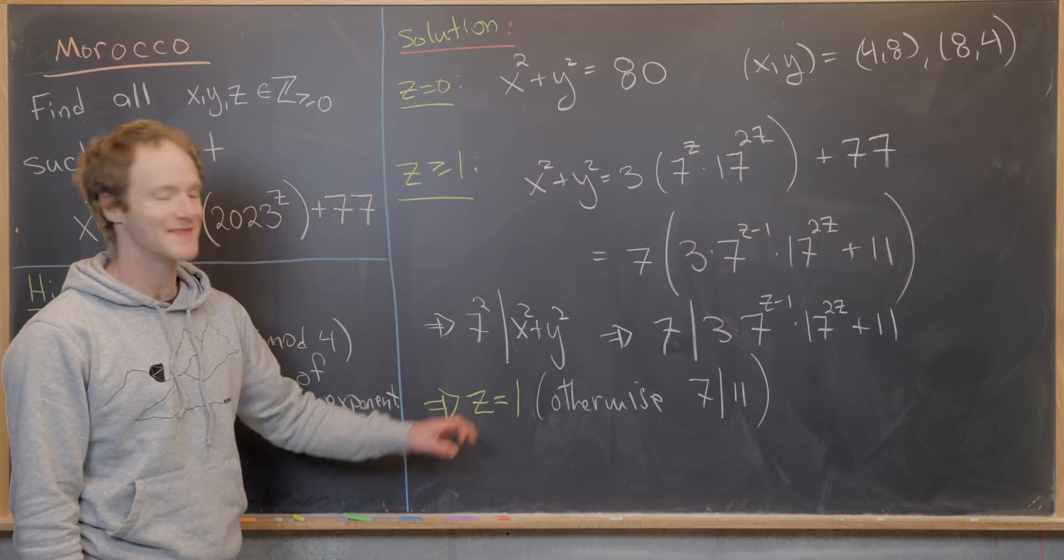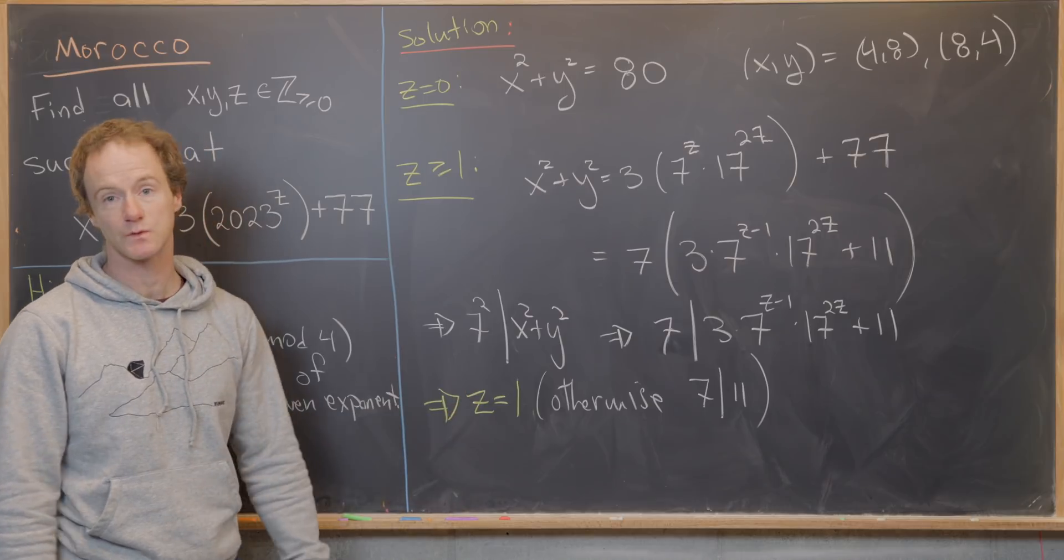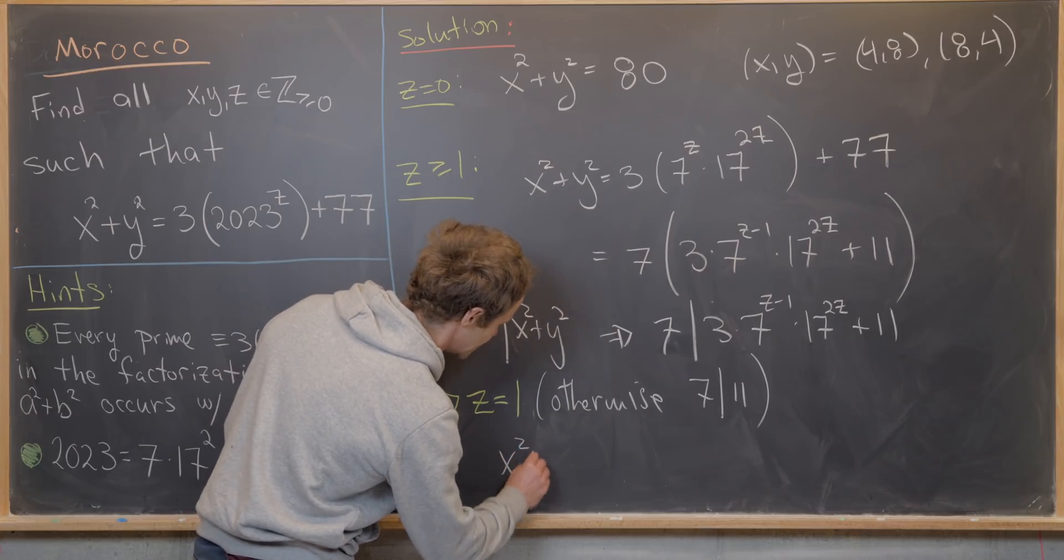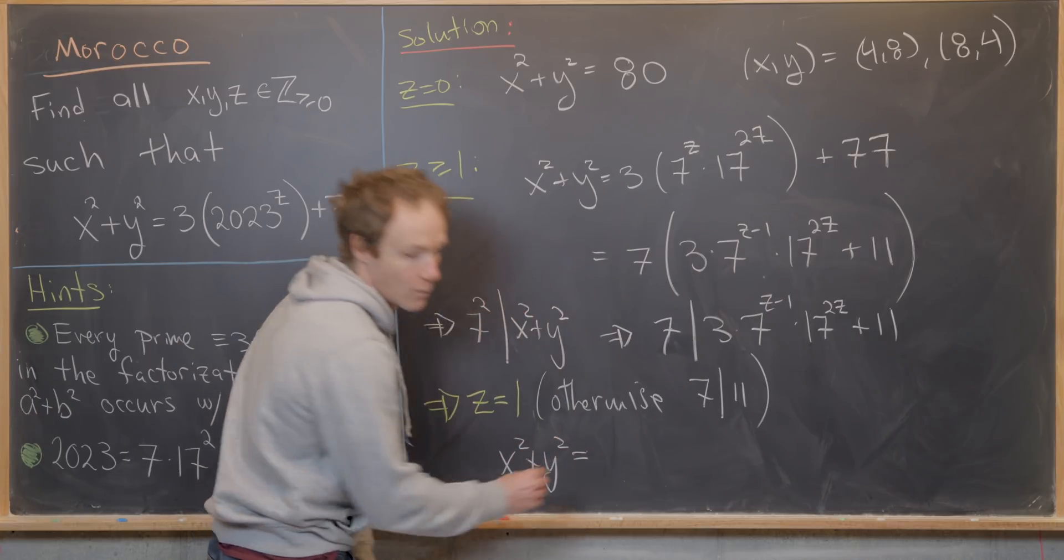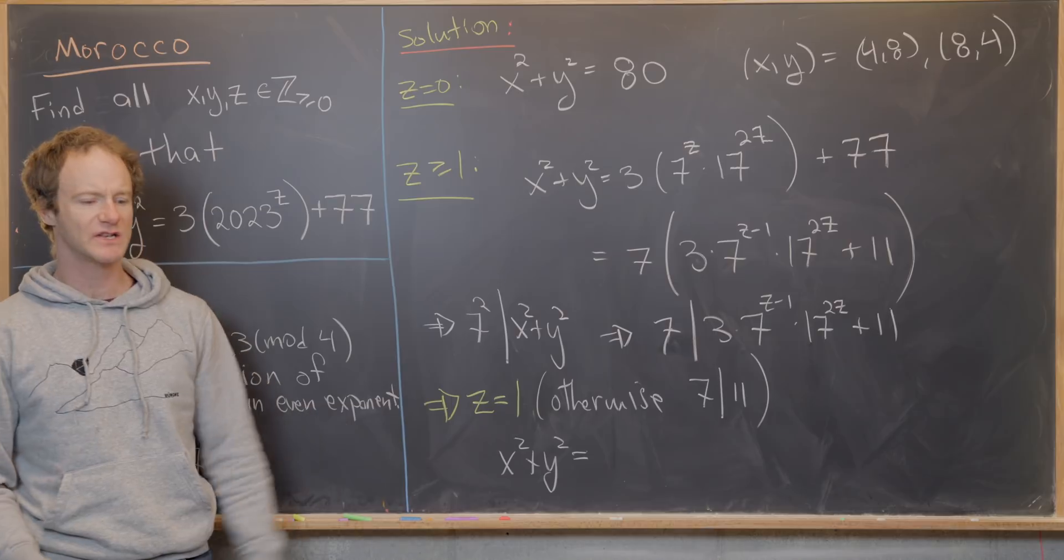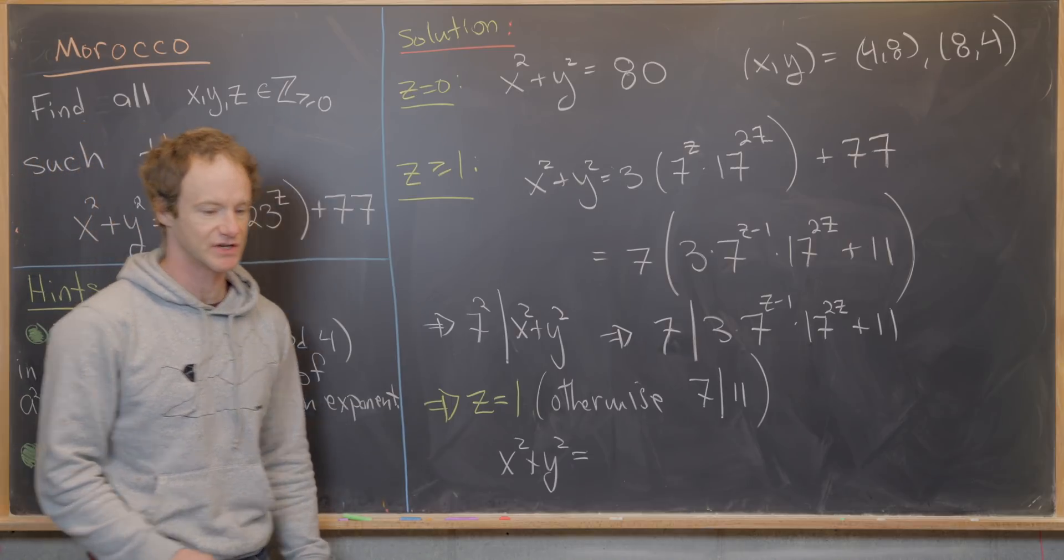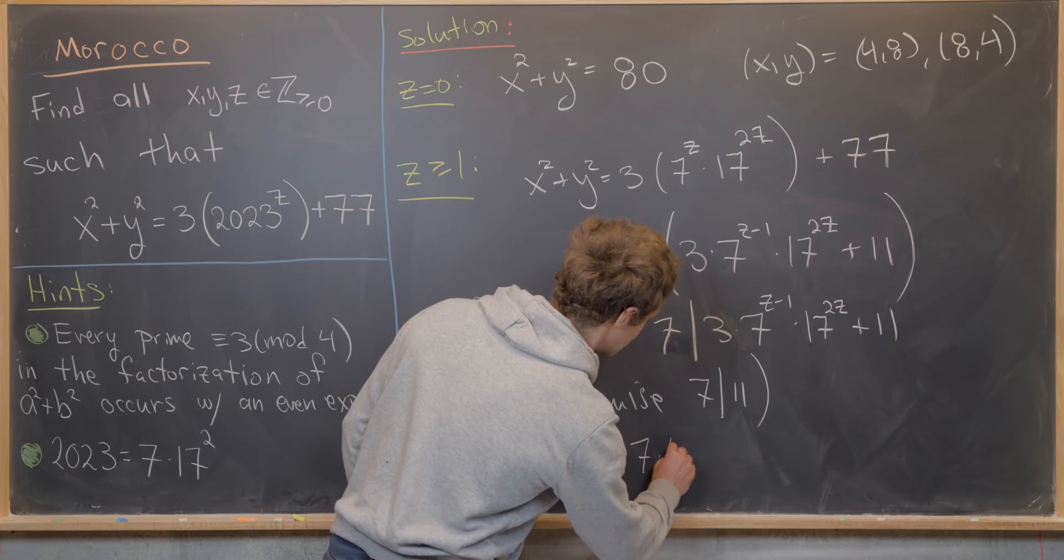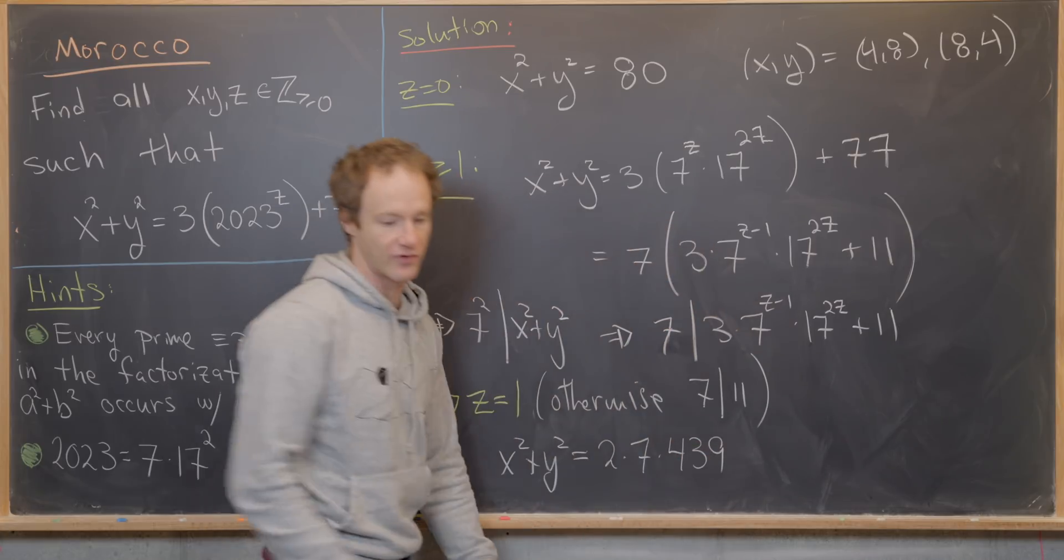But then you can take this value of z, z equals 1, plug it into this right hand side here. And you'll see that that reduces to the equation x squared plus y squared equals, I'll go ahead and just write down the prime factorization here. This is going to be 2 times 7 times 439.